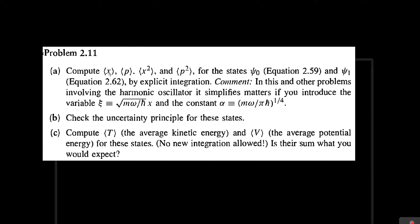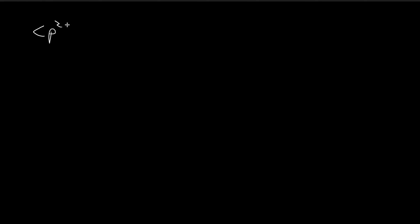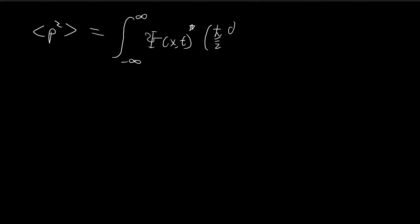In the last video, we already found expressions for these expected values. So this time we're going to focus on finding the expected value of p-squared for psi naught. The formula for the expected value of p-squared is that we take the integral, integrate the conjugate of the wave function, and then apply the momentum operator twice because it's p-squared this time, and then apply it to the wave function dx.